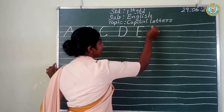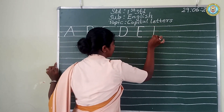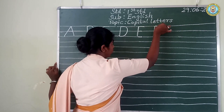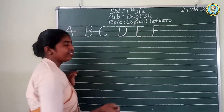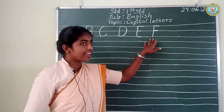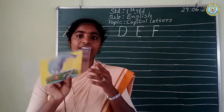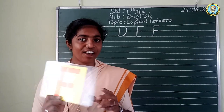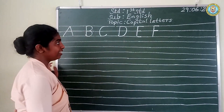Next letter. The straight line and the sleeping line on top and the middle line. Repeat after me. F. F for fish. F for fish.